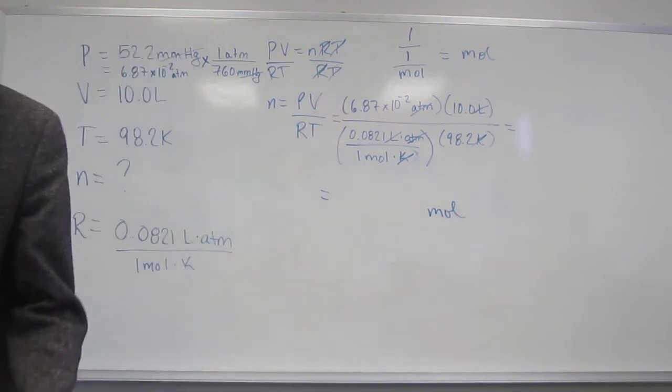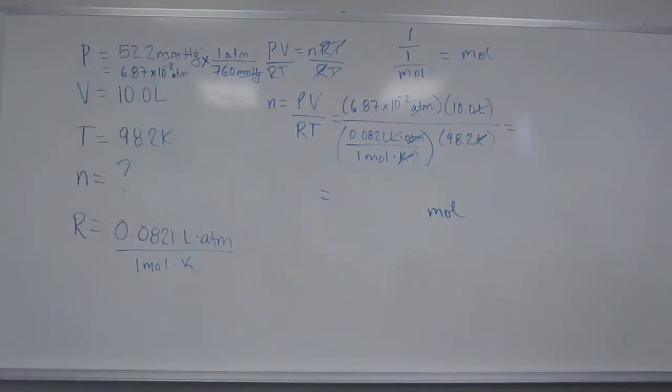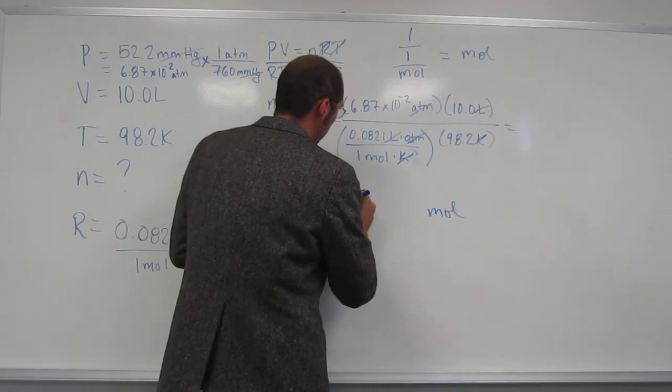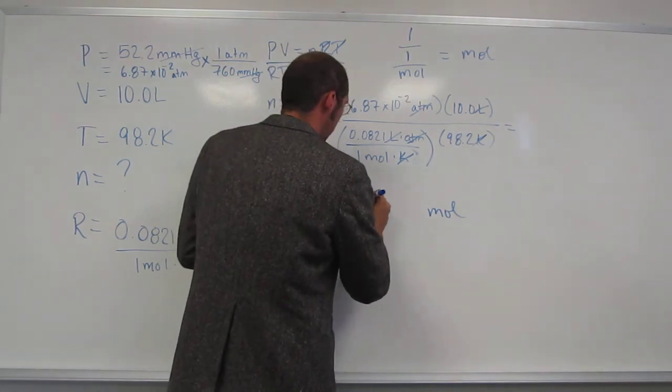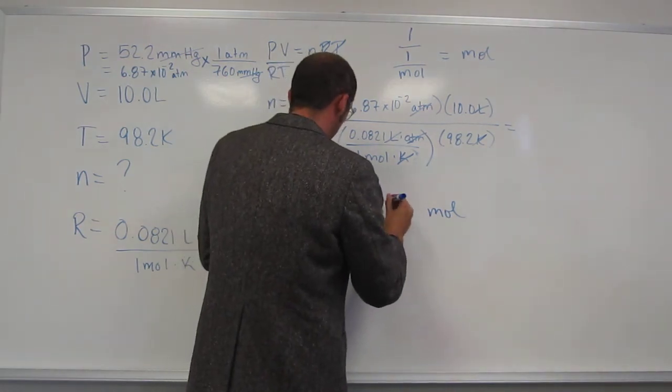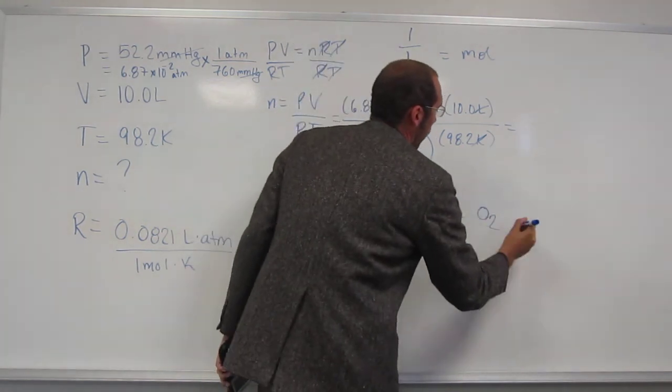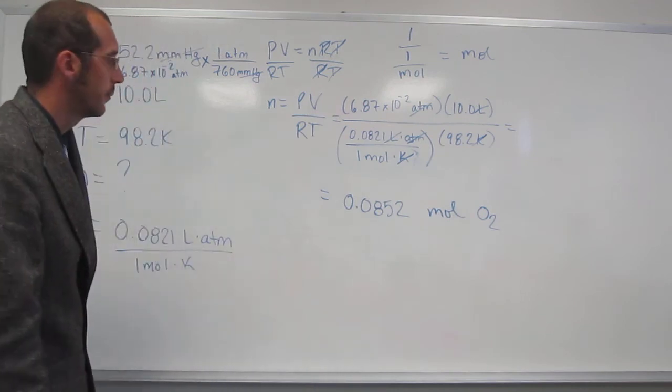And, all we got to do is plug in our numbers. So, got that, multiply it by 10, divided by R, 0.0821, enter, and then divide that by 98.2, enter. And, the number of moles, if we want to, I'm going to put it into scientific notation. Well, I'll write it out normally and then put it into scientific notation.